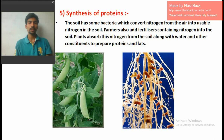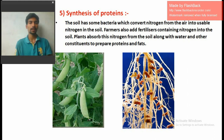But plants cannot directly absorb atmospheric nitrogen. There are many bacteria in the soil, such as Rhizobium and Azotobacter, which convert the nitrogen molecules present in the air into ammonia. This process is called nitrogen fixation.